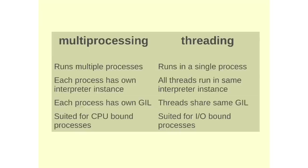A quick comparison between multiprocessing and threading. So multiprocessing runs separate processes. Threading only runs one process. The multiprocessing, each process has its own interpreter instance, but threading, all the threads run in the same interpreter instance.